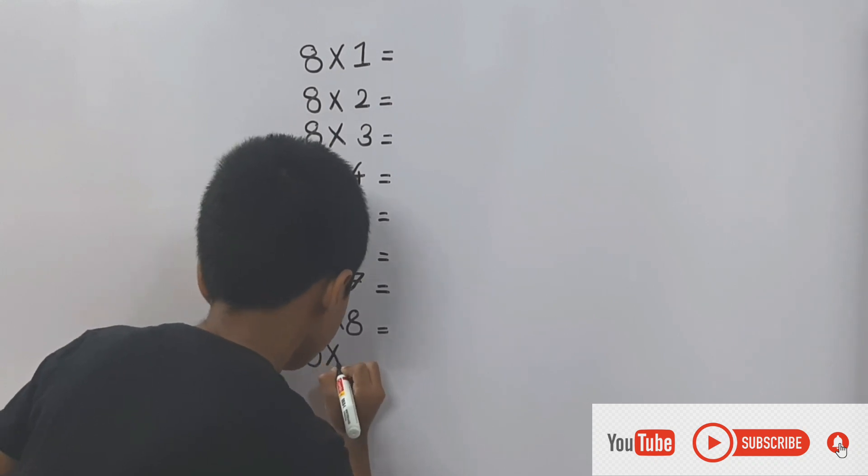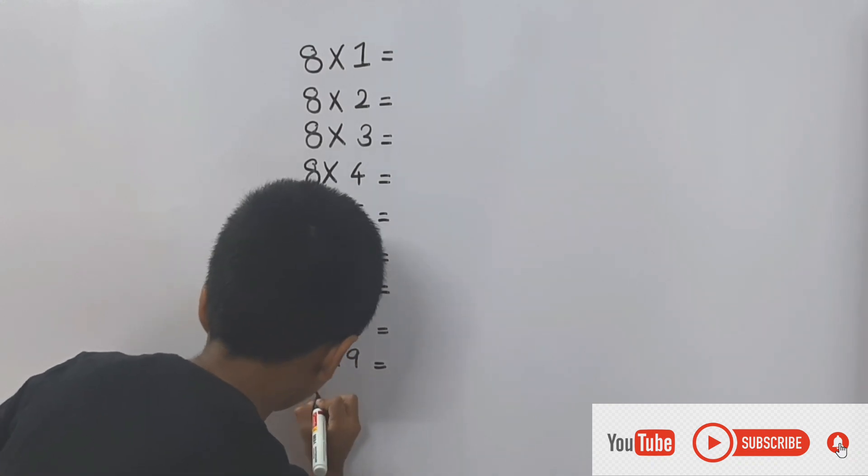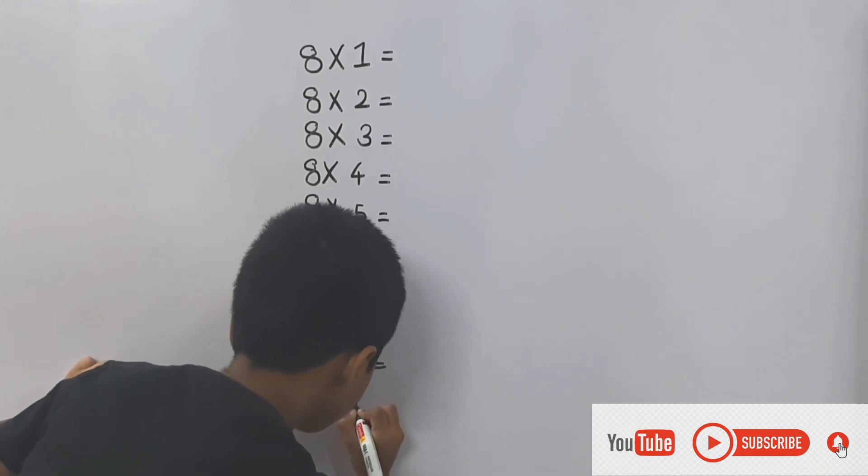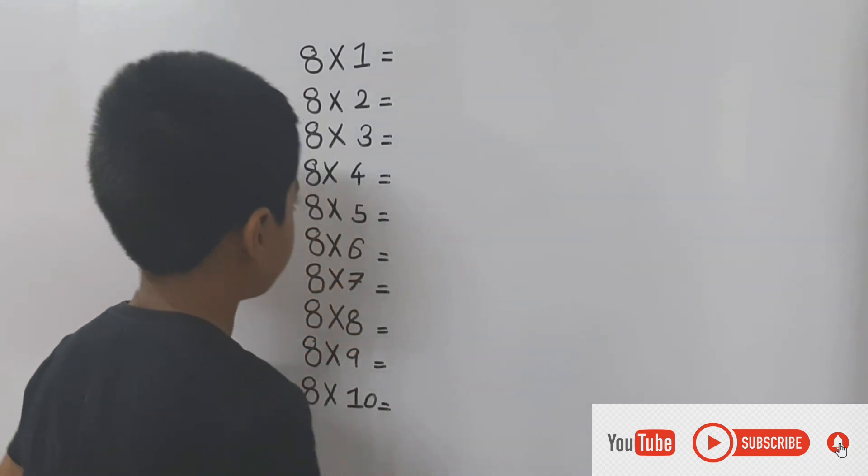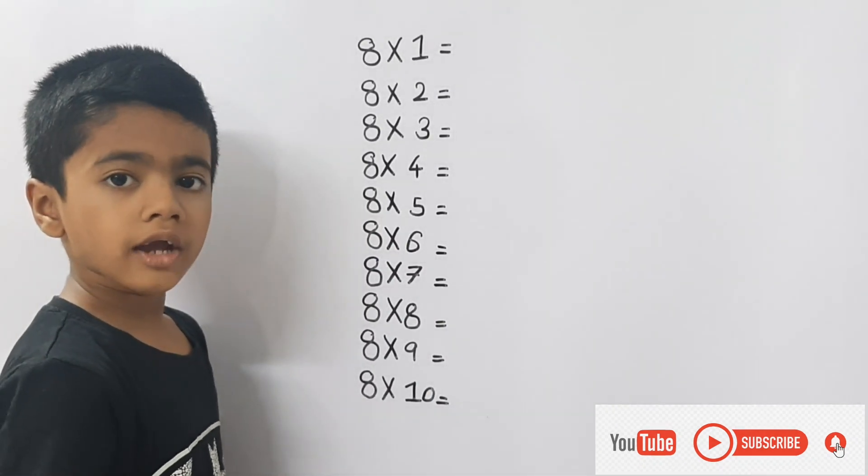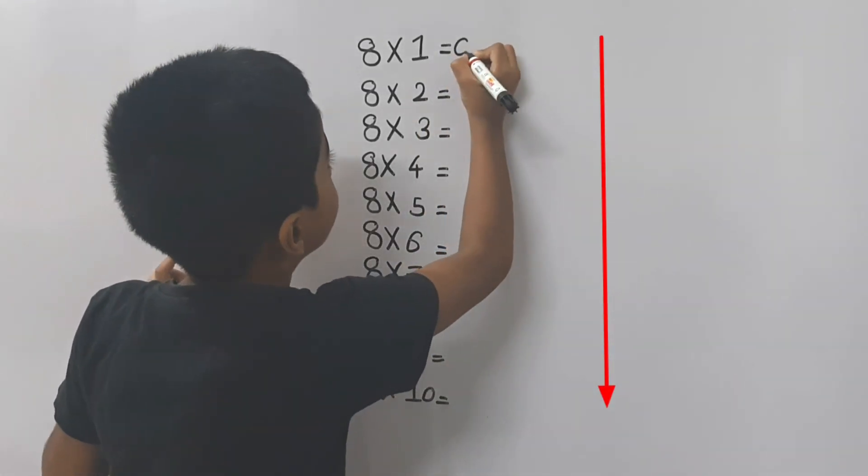8 times 8, 8 times 9, 8 times 10. Now let's write 0 to 8 vertically. 0.